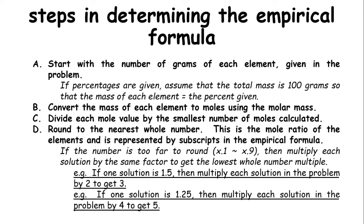Here are the steps in determining the empirical formula. First, start with the number of grams of each element. Remember, if percentages are given, you have to assume that the total mass of the compound is 100, so the percentages will become grams. Next, convert the mass of each element to their moles by dividing by the molar mass. Next, divide each mole by the smallest number of moles calculated. Then, round to the nearest whole number.